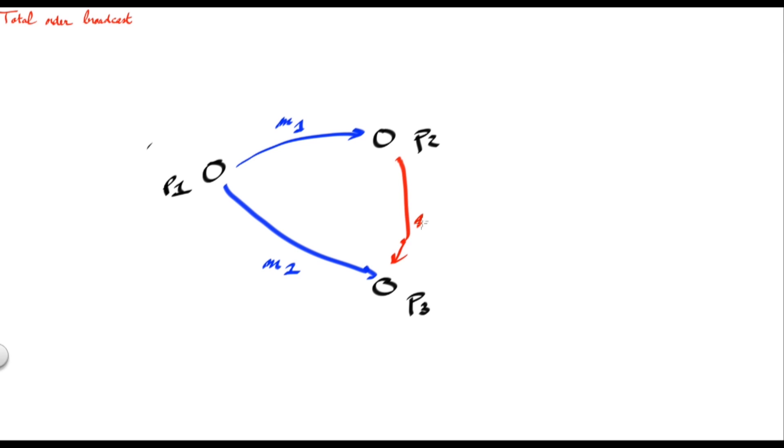And process P2 broadcasts message M2 to P3 and P1. If processes use a Total Order Broadcast protocol, they will all deliver the same set of messages in the same order. That can be either M1 before M2 or M2 before M1. Let's consider this is the second case. So P3 will deliver M2 then M1, P2 will deliver M2 then M1, and the same for P1.